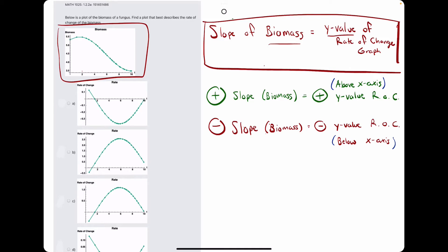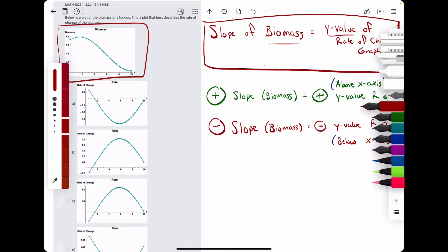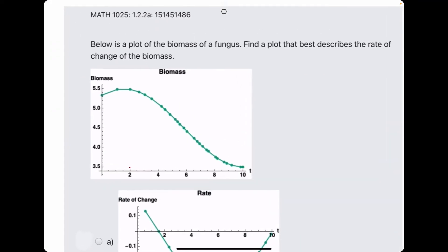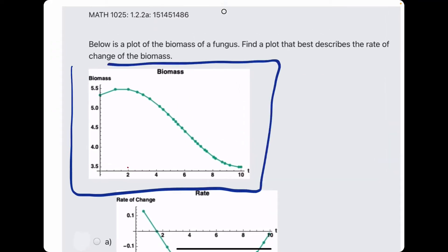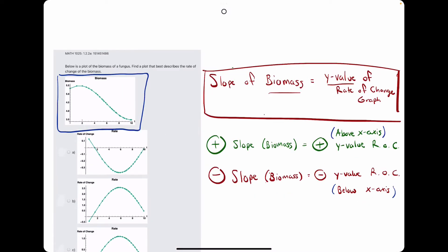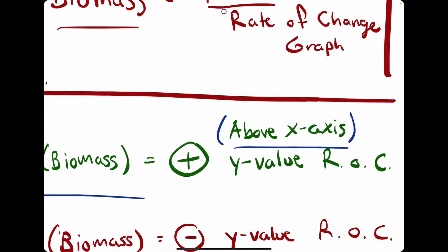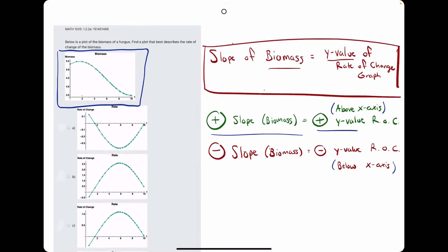So, the easy way to break it down is we can identify where this original function up here has positive and negative slopes, because where it has a positive slope, that'll correspond to where these graphs, or the correct graph, should be above the x-axis or have positive y values.